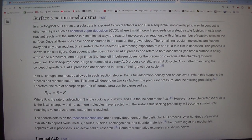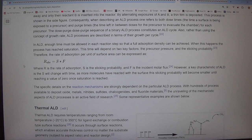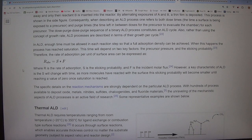Consequently, when describing an ALD process one refers to both dose times, the time a surface is being exposed to a precursor, and purge times, the time left in between doses for the precursor to evacuate the chamber, for each precursor. The dose-purge dose-purge sequence of a binary ALD process constitutes an ALD cycle. Also, rather than using the concept of growth rate, ALD processes are described in terms of their growth per cycle. In ALD, enough time must be allowed in each reaction step so that a full adsorption density can be achieved. When this happens the process has reached saturation. This time will depend on two key factors: the precursor pressure and the sticking probability.